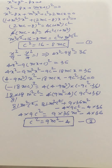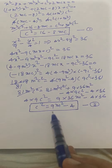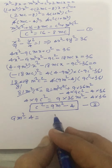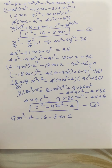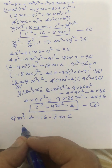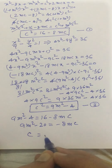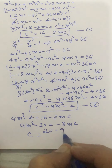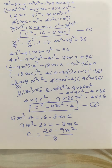We now have two equations in c and m. Setting Equation 1 equal to Equation 2: since both equal c², we write 9m² - 4 = 16 - 8mc, which gives 9m² - 8mc - 20 = 0, or c = (9m² - 20) / (8m).